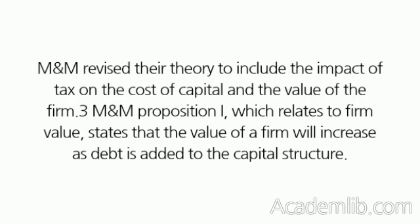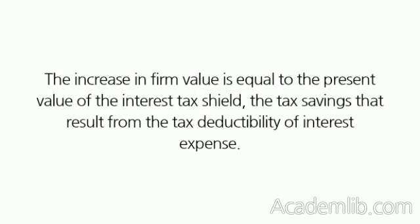M&M revised their theory to include the impact of tax on the cost of capital and the value of the firm. M&M Proposition I, which relates to firm value, states that the value of a firm will increase as debt is added to the capital structure. The increase in firm value is equal to the present value of the interest tax shield — the tax savings that result from the tax deductibility of interest expense.